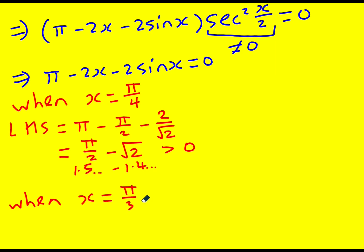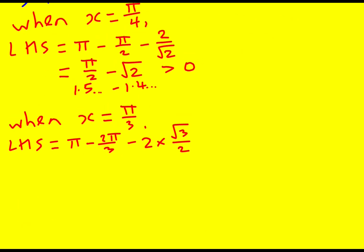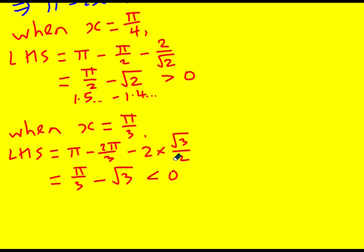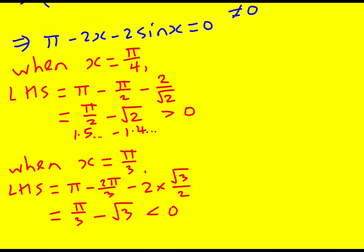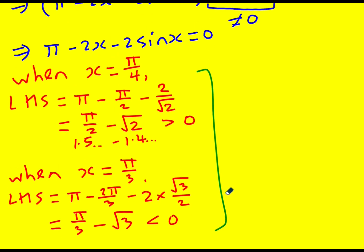Sine of π over 4 is 1 over root 2. This is going to become π over 2 minus root 2. π over 2 is about 1.5 something and root 2 is actually 1.4 something. You have to be aware of that. So this is going to be greater than zero. And then when x is π over 3, sine of 30 is a half, sine of 60 is root 3 over 2, that is the same as sine π over 3. So it's going to be 2 lots of root 3 over 2, which is going to be π over 3 minus root 3. Now that is definitely going to be less than zero.